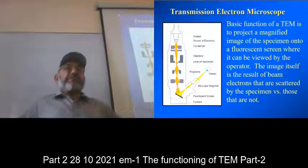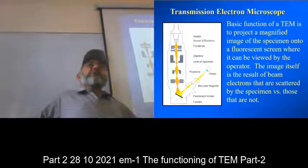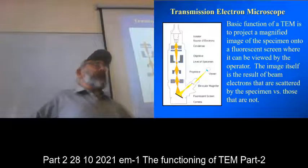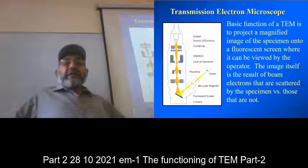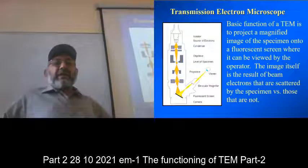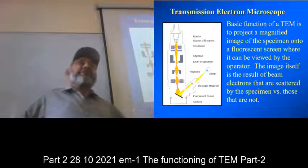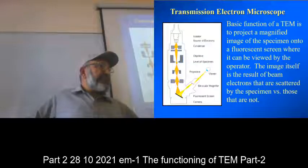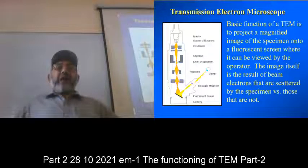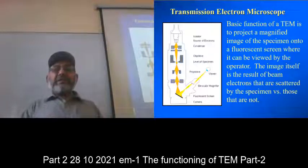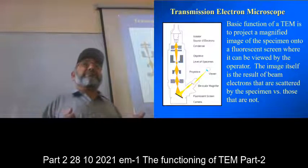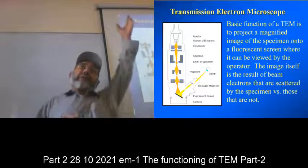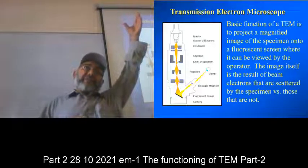When we pass through that step, we are going down the column of the electron microscope. The basic function of the transmission electron microscope is to project a magnified image of the sample onto the fluorescent screen where it can be viewed by the operator.